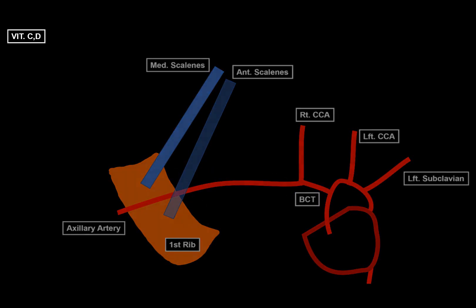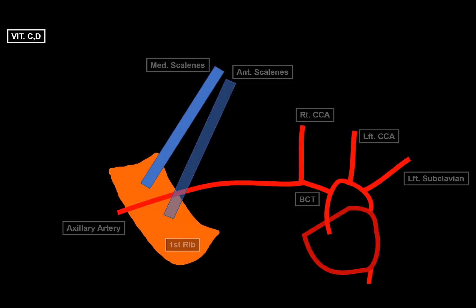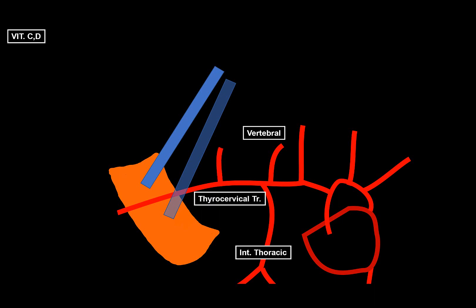Now for the mnemonic: remember VIT CD — as in vitamin C and D. This works respectively according to the topographical parts. V stands for vertebral artery, I for internal thoracic (which divides into the superior epigastric and the musculophrenic artery), and T for the thyrocervical trunk. Then in the second part, C is for the costocervical trunk. And lastly, D for the dorsal scapular.